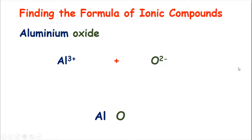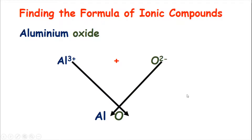Now we start by drawing an arrow from the charge of the aluminium ion — the 3 — all the way down to the oxygen. Then we draw a second arrow from the oxide ion, the 2-, all the way down into the gap between the Al and the O. It's called the crossover method because those two arrows basically cross over and these numbers are going to cross over.